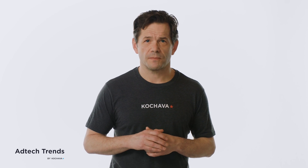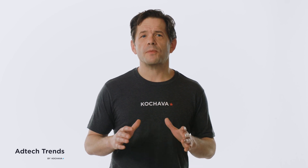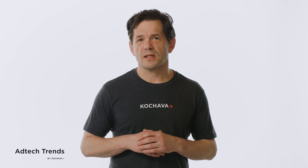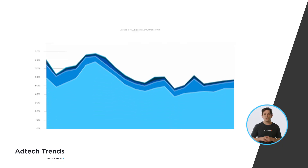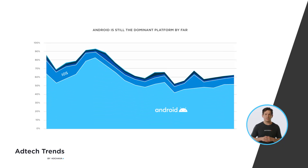Now let's take a more global perspective. While Apple has grown exponentially in the U.S., Android still owns the lion's share of attribution on the global market. Worldwide, Android is the operating system on about 73% of all devices.